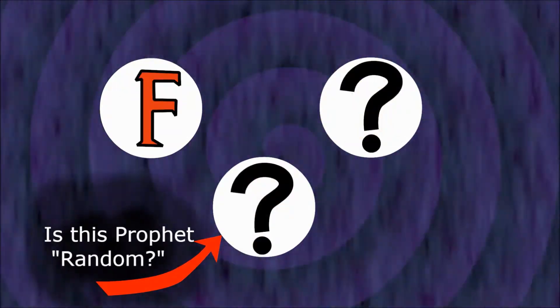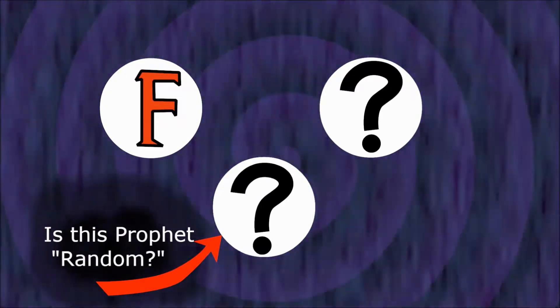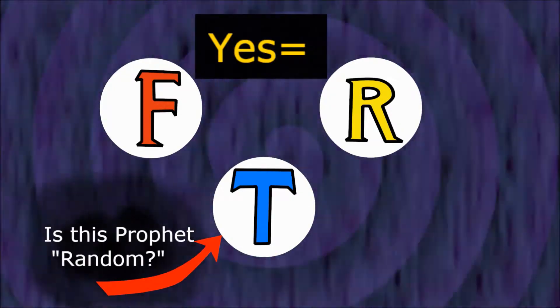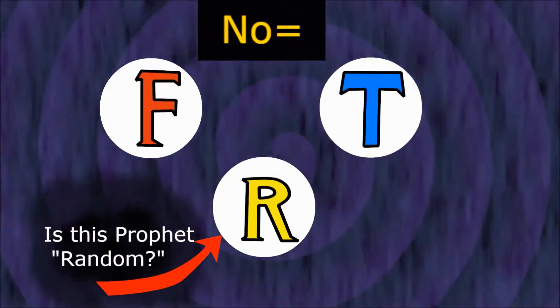Likewise, if you know you're talking to False on the last question, you can do the same thing and account for its dishonesty. You ask, 'Is this guy Random?' And if he says yes, that's Truth and the other is Random. If he says no, that's Random and the other is Truth.